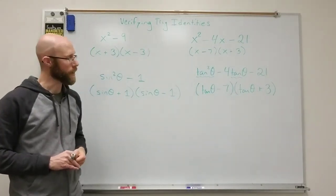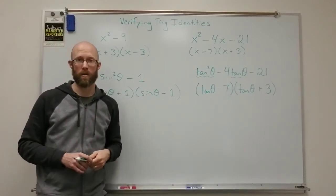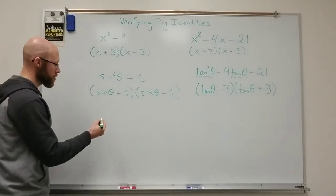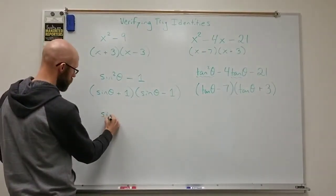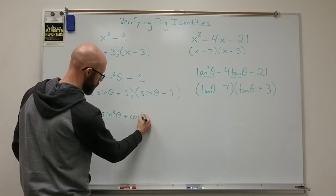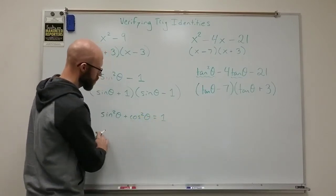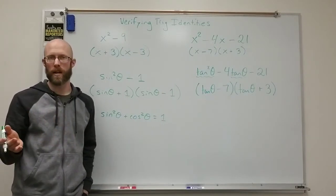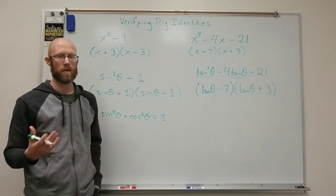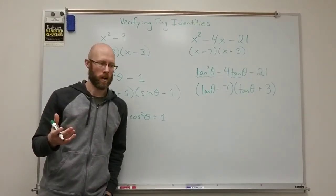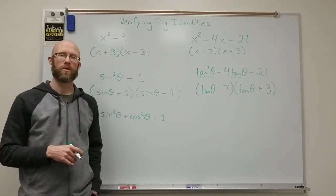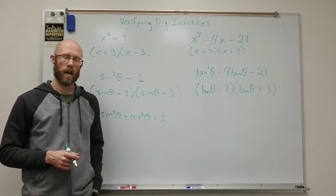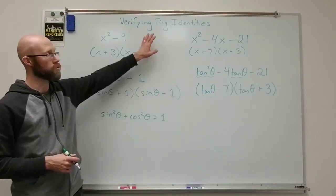And then of course we have our fundamental identities that we've talked about now in the past. Your Pythagorean identities, for instance, which is your sine squared theta plus cosine squared theta equals one. And then all the other variations with the tangent and secant and the cotangent and cosecant. You have your reciprocal identities, your quotient identities, uneven identities. So there's lots of fundamental identities that we can also bring in as we go through verifying new trig identities.